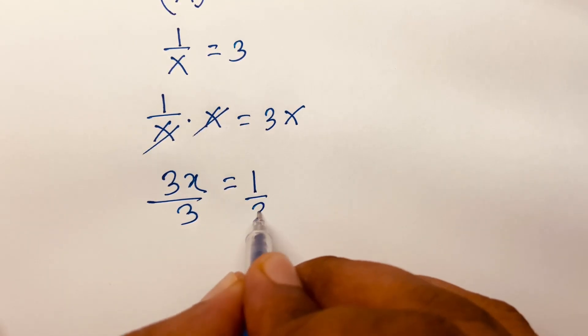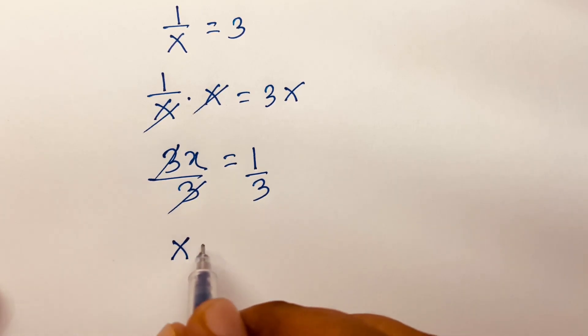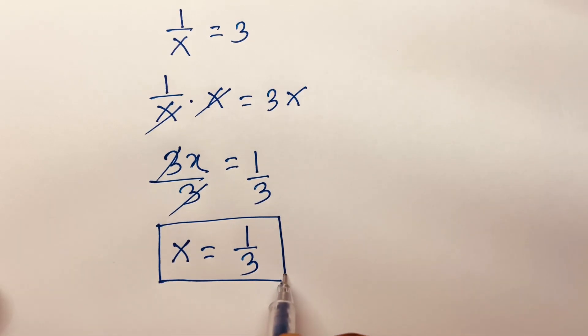Then I divide both sides by 3. So 3 and 3 cancel, we'll find out the value of x is equal to 1 over 3. This is our final answer.